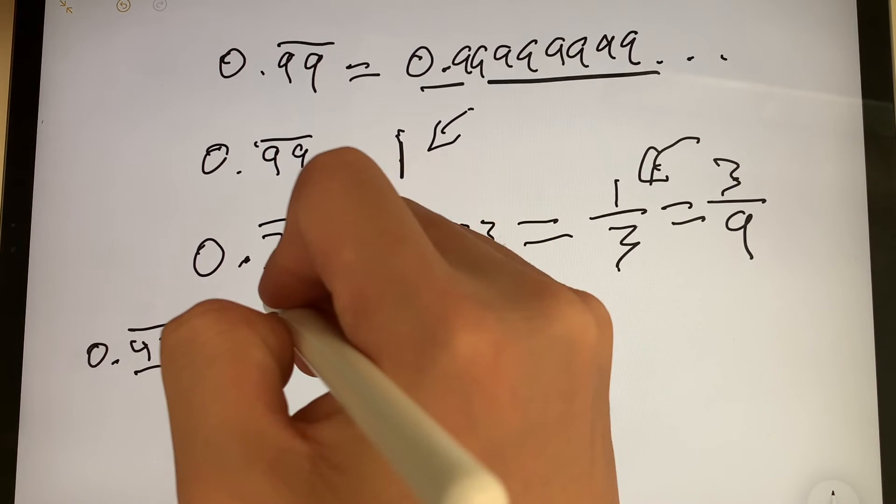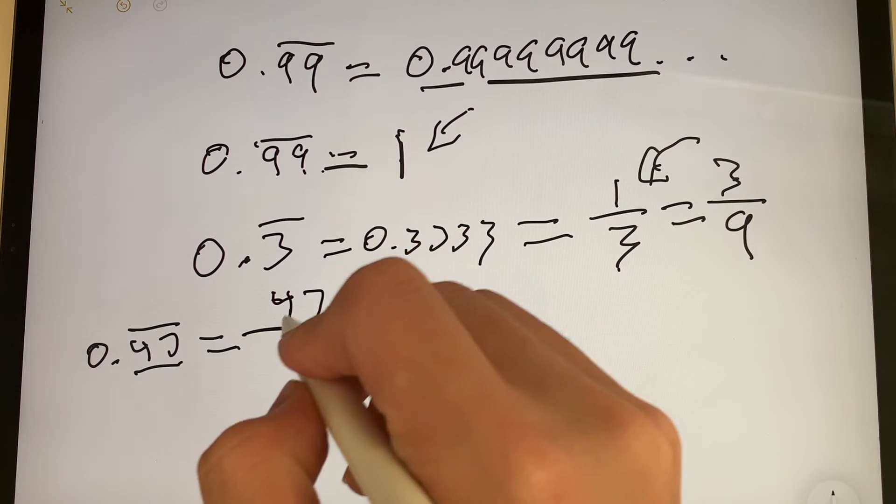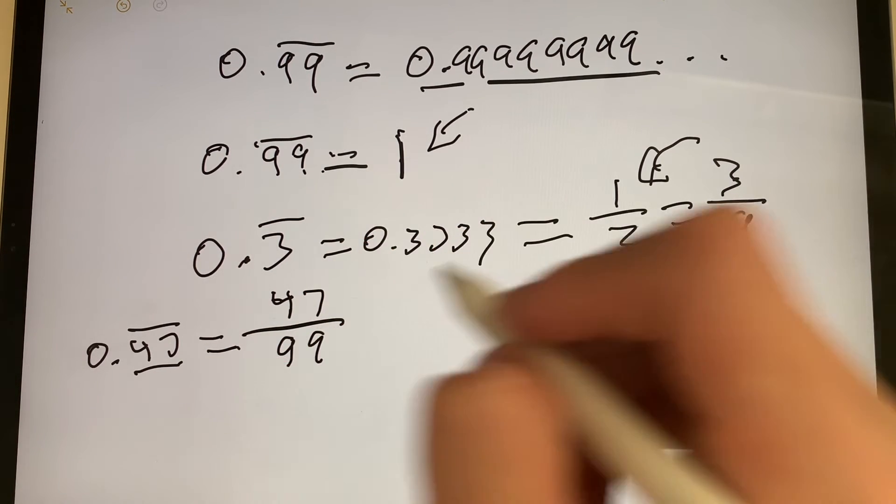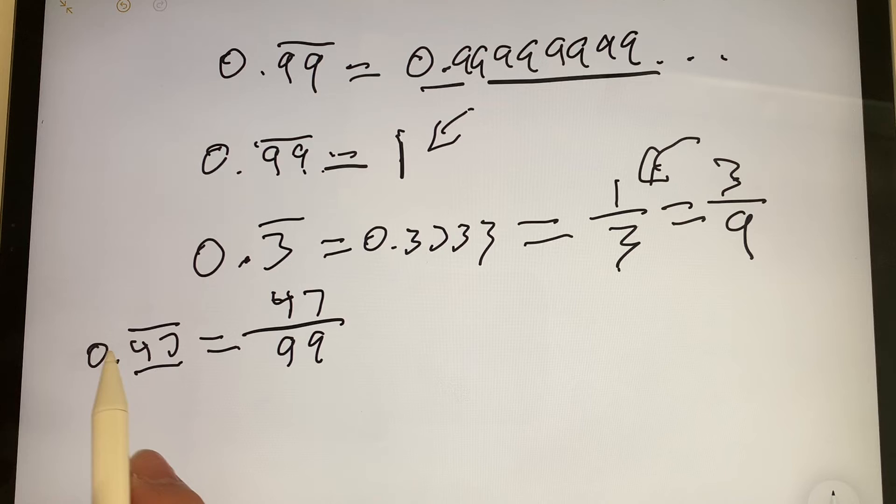So in this case, there are two digits, so it means we're going to put 47 over two 9s. So it's going to be 47 over 99. Now 0.47 repeating is equal to 47 over 99. And that's it.